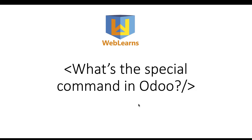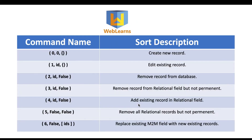Special commands are specifically used for two relational fields: one-to-many and many-to-many. When doing any operations — creating, updating, or deleting records — these commands are very useful. You may have seen these commands while creating or updating a parent model. There are a total of seven commands, numbered zero through six, each with a different purpose.